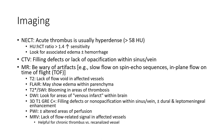On non-contrast CT, acute thrombosis is usually hyperdense, more than 58 Hounsfield units. An sinus-to-hematocrit ratio of more than 1.4 increases sensitivity. Associated edema may also be present.